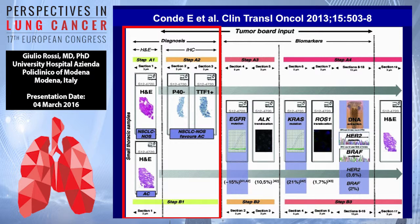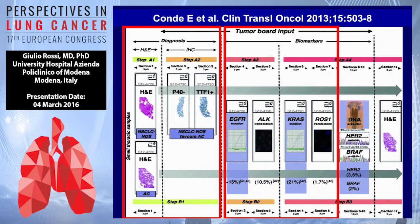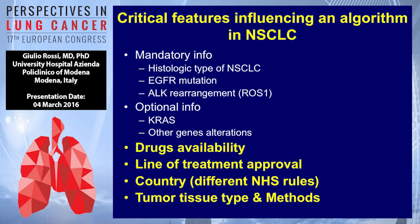The second point for the pathologist is to define the biomarkers — particularly those predictive for some druggable driver. We have to know that the type of algorithm we choose mainly depends on the availability of drugs, on the line of treatment approval in different countries, different national system rules, and the type of tumor tissue and methods we want to apply in our lab.